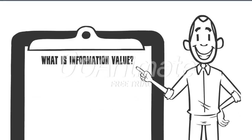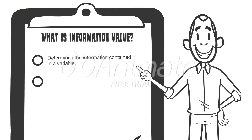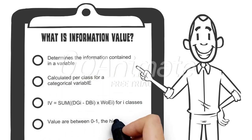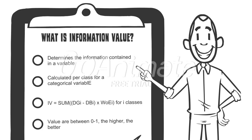Now that we know the weight of evidence, let's see how it can be used in the information value. It is relevant to know that the information value determines all the information which is contained in one variable. We calculate it per class of a categorical variable, and then sum up all the separate information values to determine this particular information.